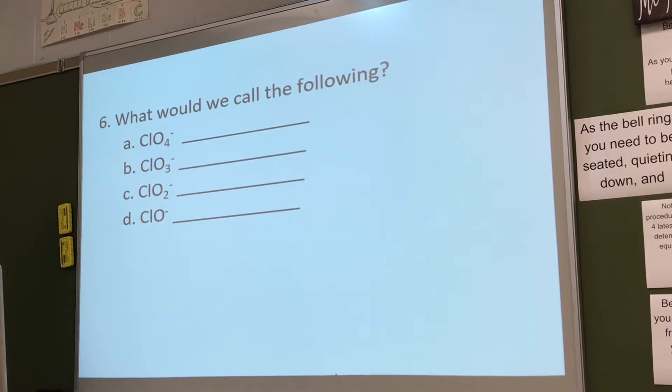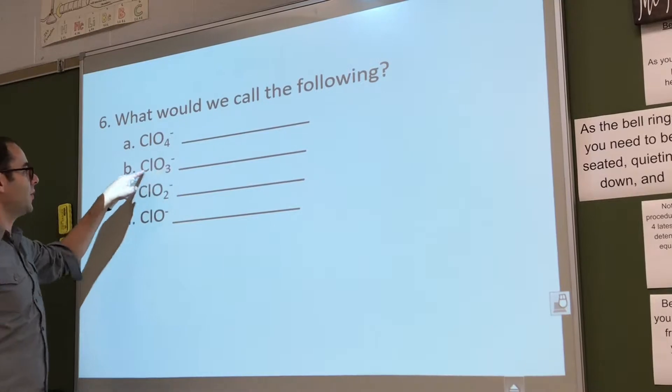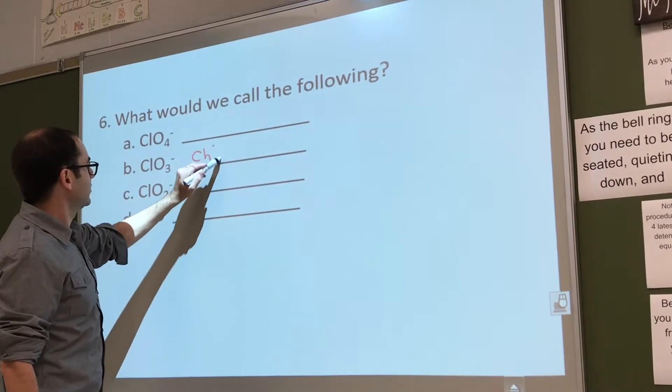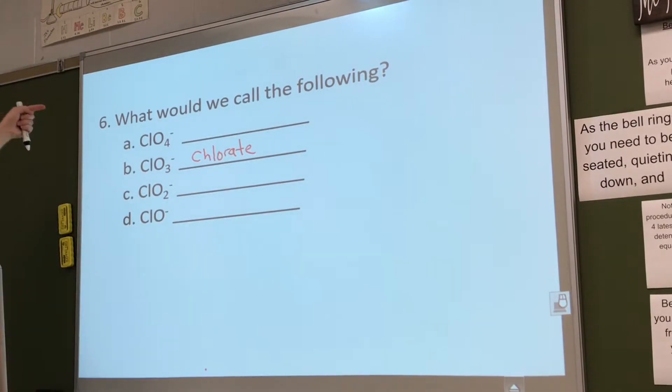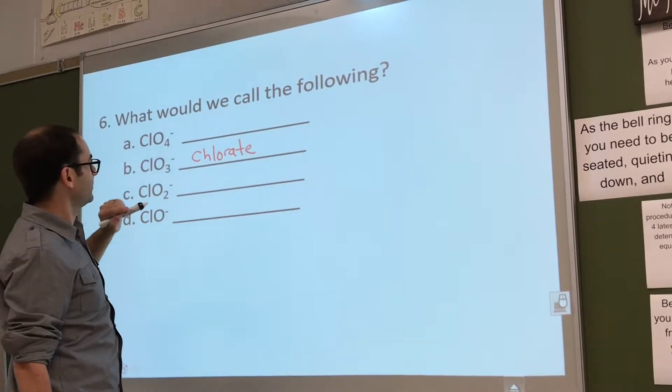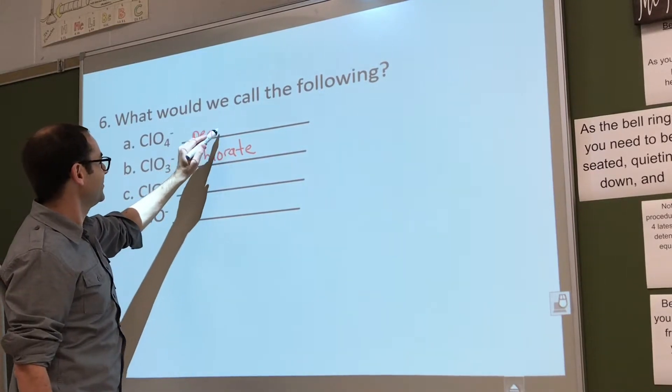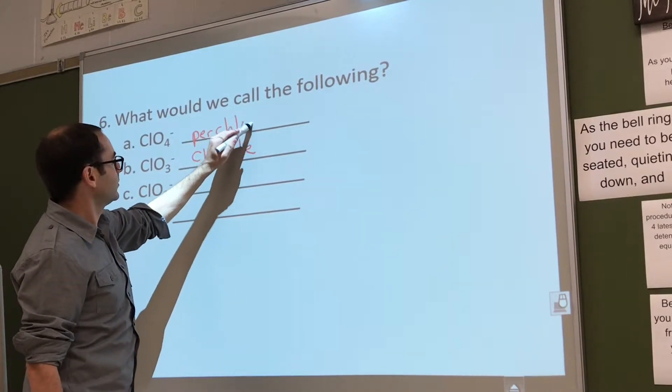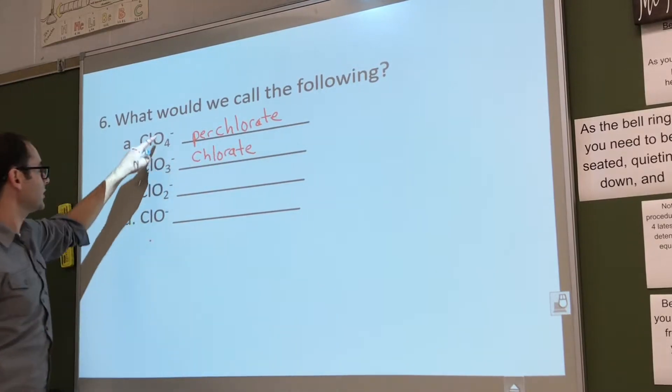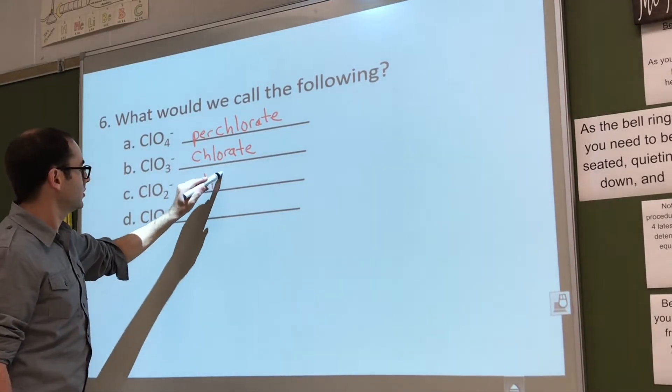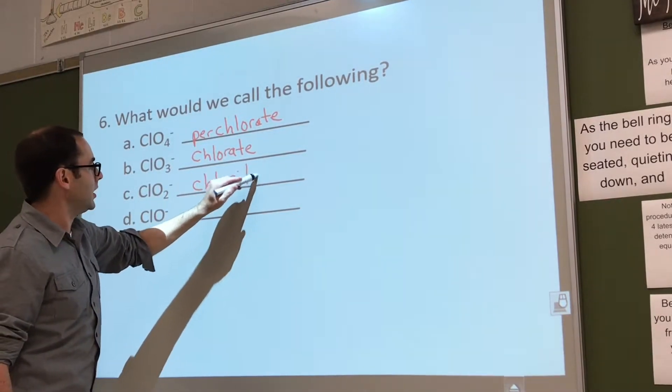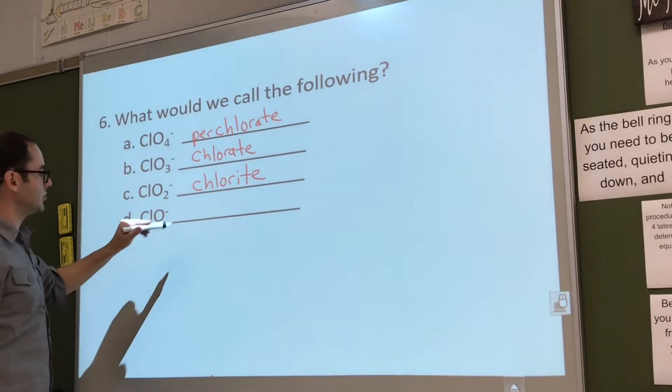Which is the one you memorized? ClO3 minus 1. What was this? Chlorate. Good. So one more oxygen is going to be what? Perchlorate, right. One more oxygen is per-chlorate. One less oxygen is chlorite.